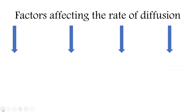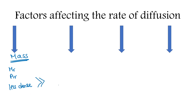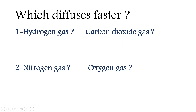Factors affecting the rate of diffusion. The first factor is mass — specifically the relative molecular mass or relative atomic mass. Less dense particles diffuse faster than more dense particles. For example, hydrogen gas H₂ has a relative molecular mass of 2 (two hydrogen atoms each with atomic mass 1). Carbon dioxide CO₂ has one carbon (atomic mass 12) and two oxygen atoms (atomic mass 16 each), giving a relative molecular mass of 44. So hydrogen gas diffuses faster than CO₂ because it has a much smaller relative molecular mass.